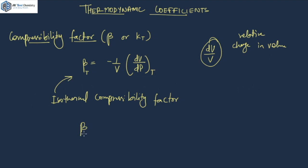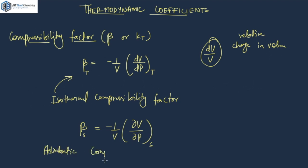There is one more, the adiabatic compressibility factor, which has the formula beta S. It is minus 1 upon V, and the formula remains the same: del V by del P — the same relative change in volume with respect to change in pressure — but it is done at constant entropy. So this is the adiabatic compressibility factor. It can be either calculated at a fixed temperature, giving the isothermal compressibility factor, or at constant entropy, giving the adiabatic compressibility factor.